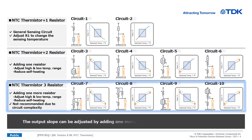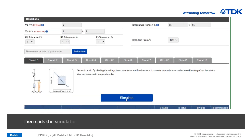The output slope can be adjusted by adding one more resistor. Then click the simulation button.